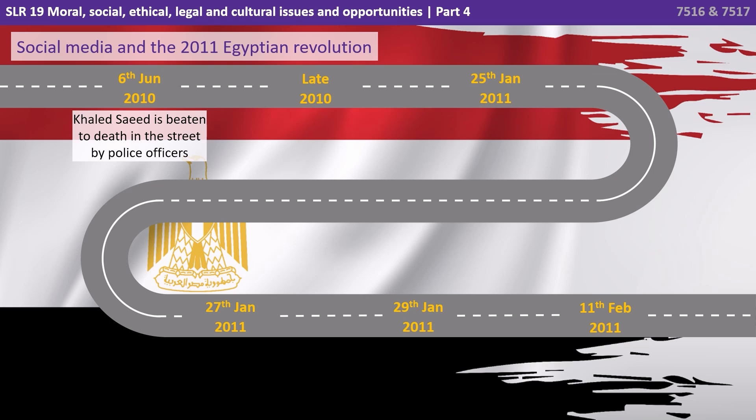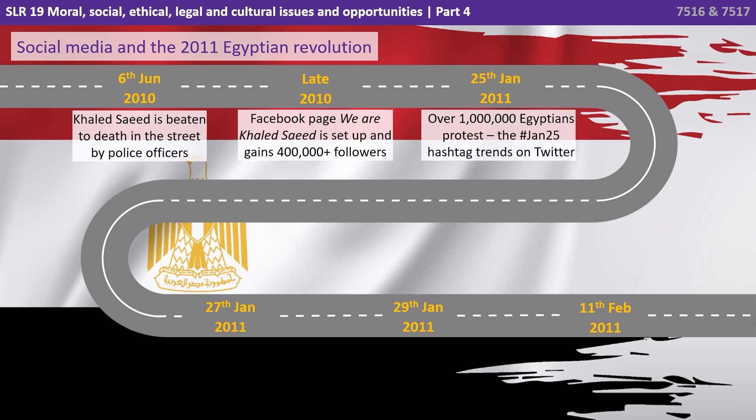Here is a case study scenario. On the 6th of June 2010, Khalid Saeed was beaten to death in the streets by police officers. By late 2010, a Facebook page had been created called 'We Are Khalid Saeed', and it was set up and gained, very quickly, over 400,000 followers. By the 25th of January 2011, over a million Egyptians went to protest, and the Jan 25 hashtag started to trend on Twitter.